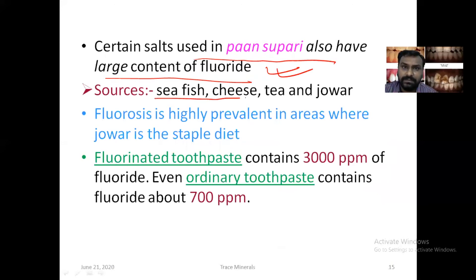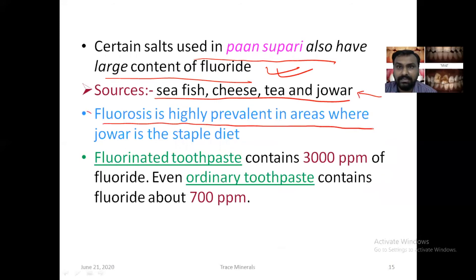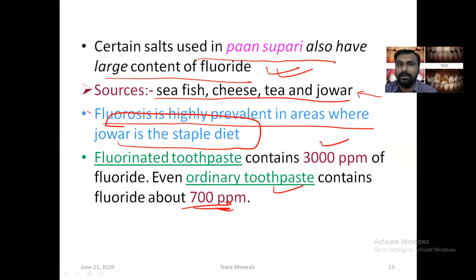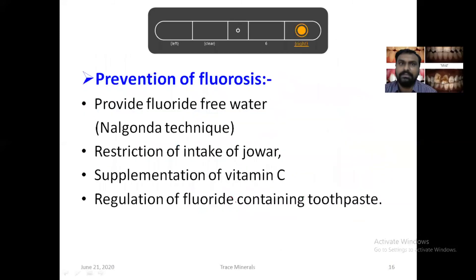Sea fish, cheese, tea, and jowar can also be sources of fluoride. Fluorosis is highly prevalent in areas where jowar is a staple diet. Fluorinated toothpaste contains 3000 ppm of fluoride, and even ordinary toothpaste contains 700 ppm of fluoride, so we have to take care to prevent fluorosis.